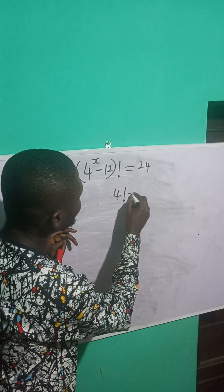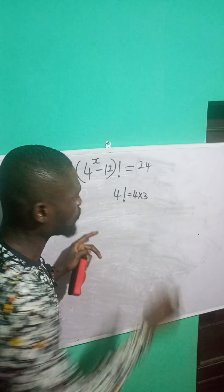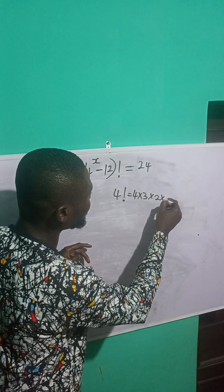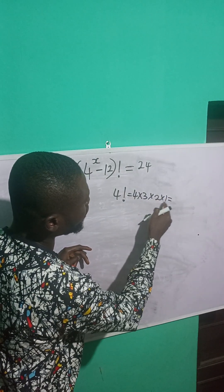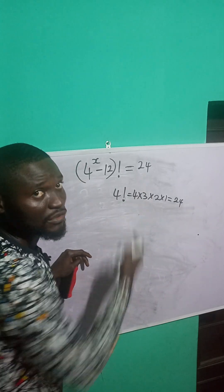4 factorial is the same as what? 4 times 3, multiplying in descending order by 1. So 4 times 3 times 2 times 1. 4 times 3 is 12, 12 times 2 is 24, 24 times 1 is 24. So 4 factorial is the same as 24.